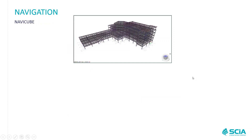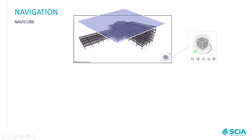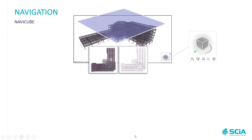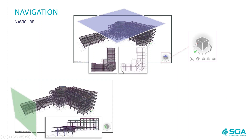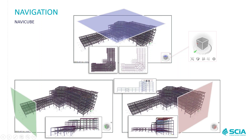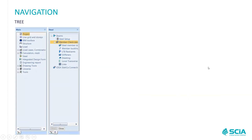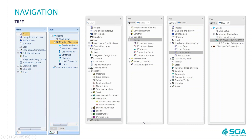We have a brand new NaviCube inside the 3D window. Imagine you would like to look at the top of your structure — you can do that via the NaviCube by clicking on the top of the cube to get the top view, or from the left or right similarly. We also have a new tree in CI Engineer. The old tree with buttons has been improved with a more modern design and the ability to easily move from one service to another.